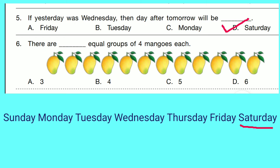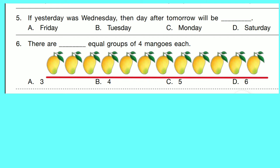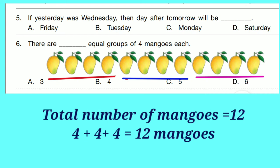Question number 6: There are dash equal groups of 4 mangoes each. Counting the number of mangoes, there are 12 mangoes. Counting by 4, we get 3 groups. So correct option is A: 3.